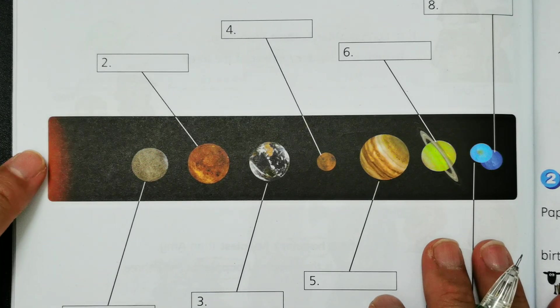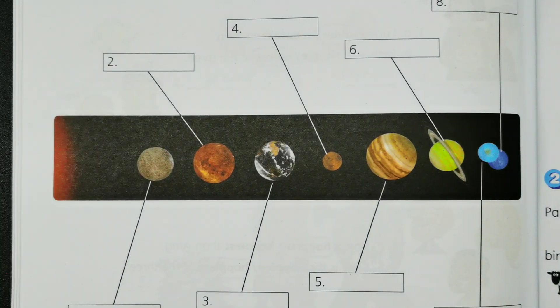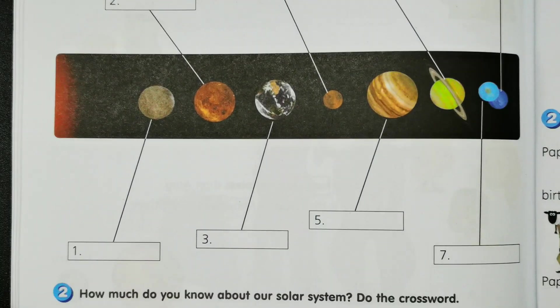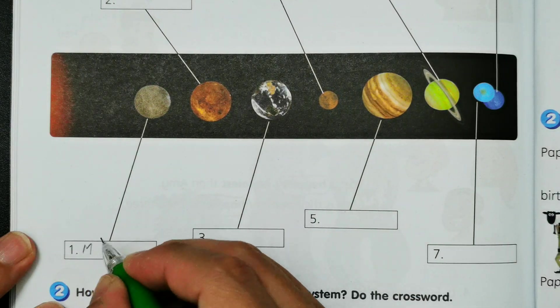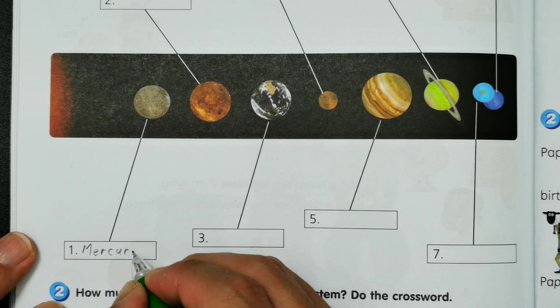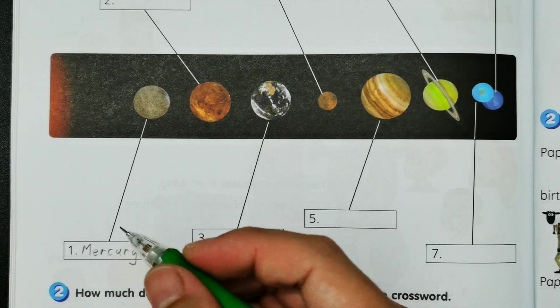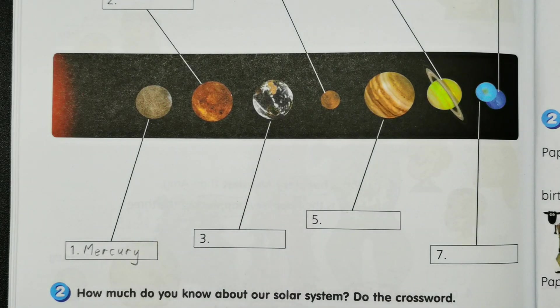And then number one, this is nearest to the Sun, so we have Mercury: M-E-R-C-U-R-Y. So remember, the first alphabet is always capitalized for these planets, so Mercury.